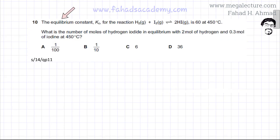The following question reads that the equilibrium constant Kc for the reaction H2 plus I2 in equilibrium with HI, all of them are gases, is 60.